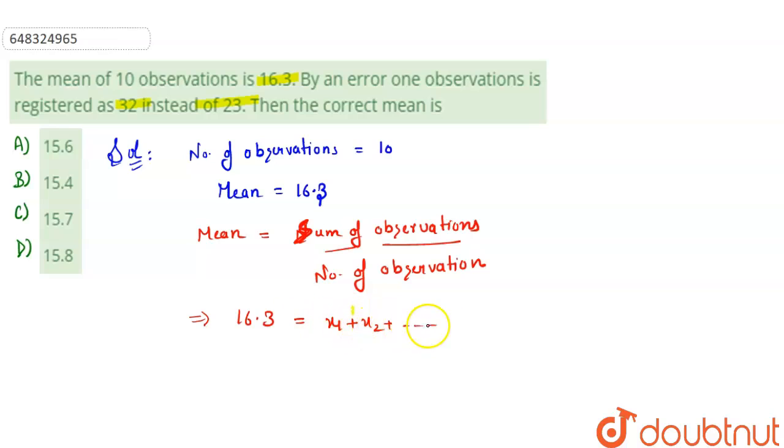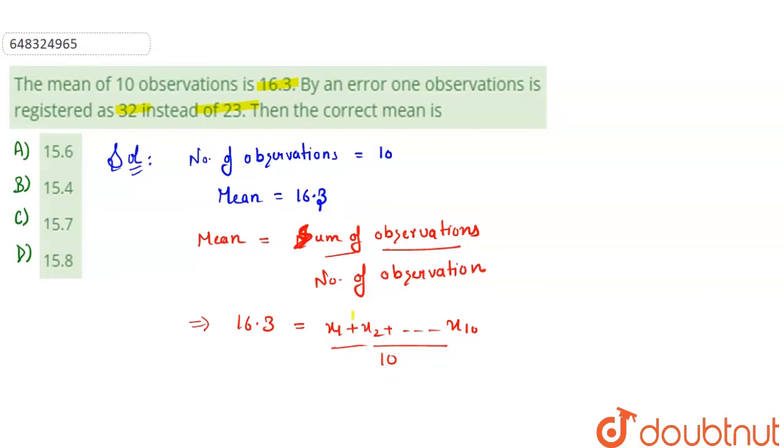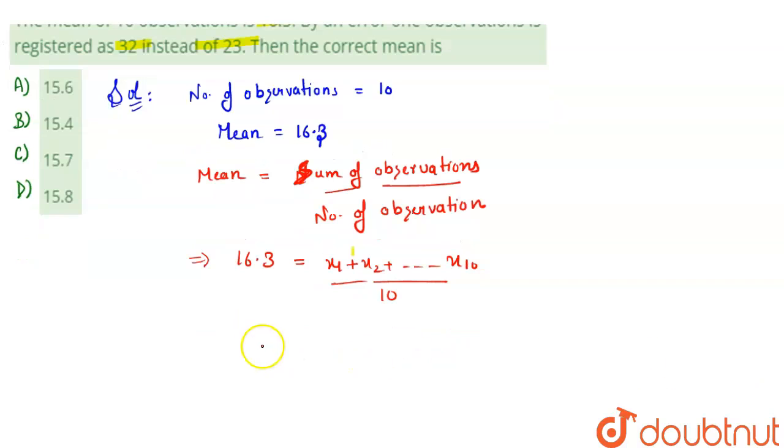plus x2 plus up to x10, because there are 10 observations, divided by number of observations, 10. So this is the formula. Now after that, it is given one observation